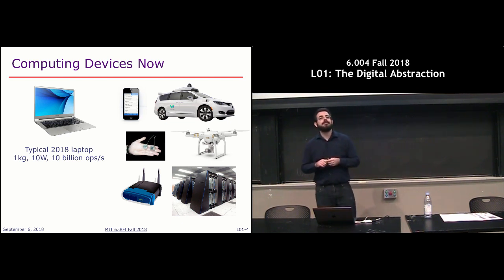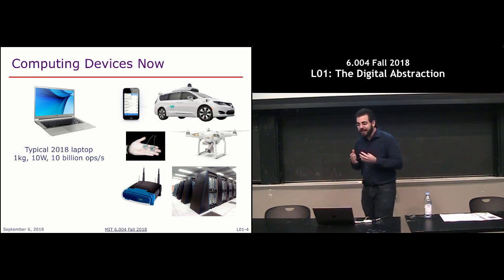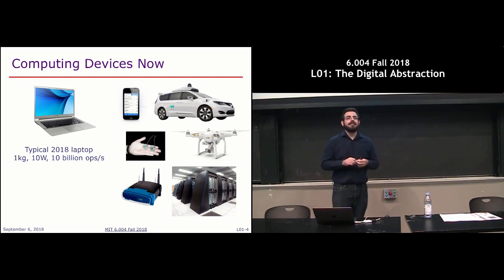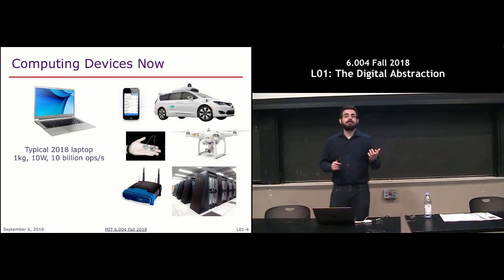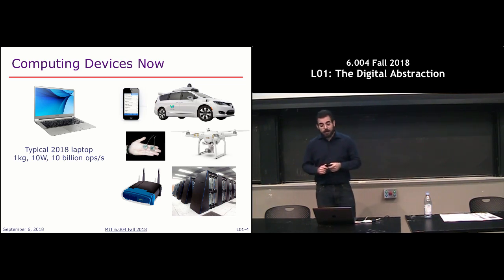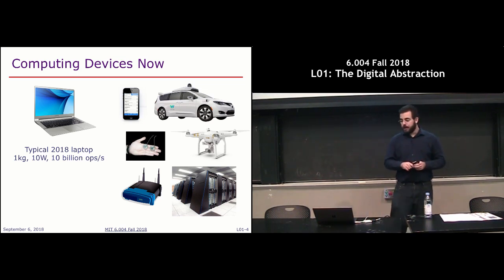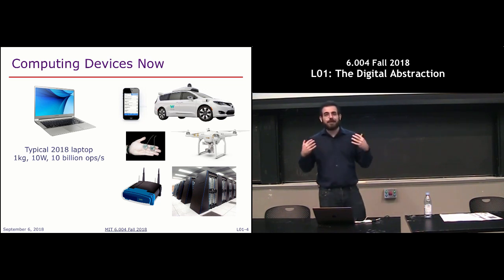Whenever you see that computing is so pervasive, you might wonder — don't we have enough? Have we reached enough compute capability? A key point to realize is that we not only have a lot of compute capability, but this capability is growing very quickly. Ten years ago, many of these classes of systems either didn't exist, like self-driving cars, or were in their infancy, like smartphones or data centers. Progress in computer hardware essentially enables new and unexpected classes of systems that then also transform the rest of computer science.